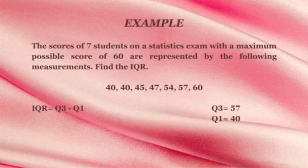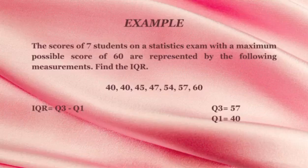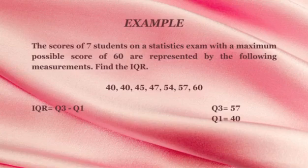Lastly, now that we have the value of Q1 and Q3, we can solve for the IQR. The formula is Q3 minus Q1. Q3 is equal to 57 and Q1 is equal to 40. We substitute, then we get the answer of 17.